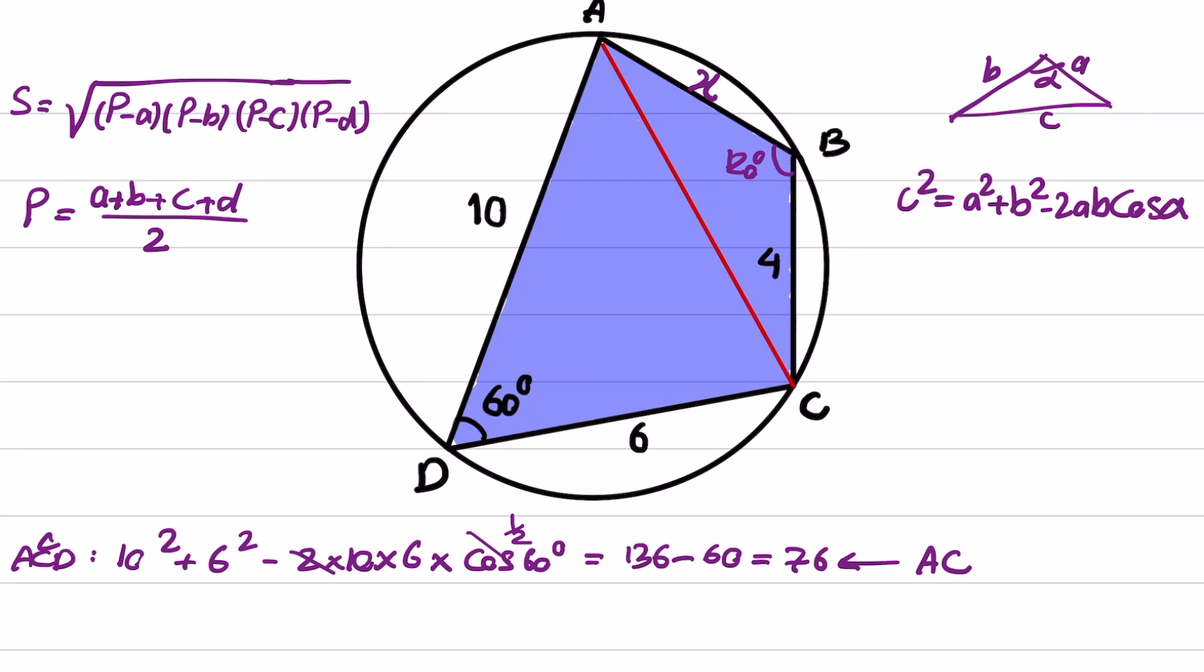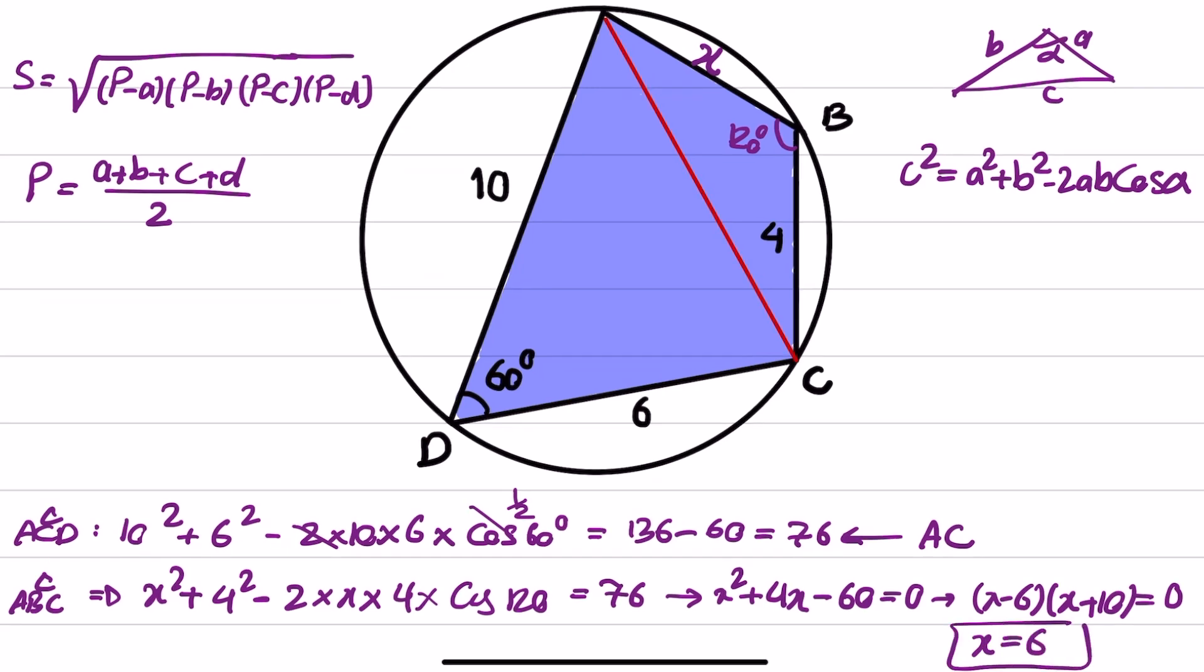We can now apply law of cosines in this triangle to obtain the value of x. Now, if you write the same law for ABC, you will get x squared plus 4 squared minus 2 times x times 4 times cosine 120. And if you simplify this, x squared plus 4 times x minus 60 is equal to 0. x minus 6 times x plus 10 is equal to 0. And the only acceptable answer is x equals to 6.